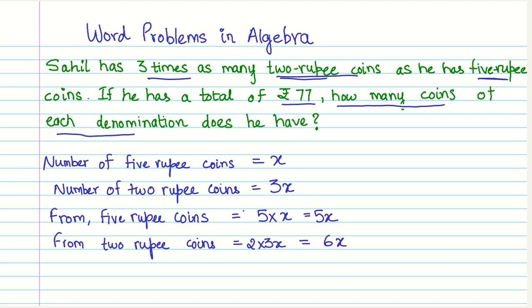Now we can proceed to form an algebraic equation because we are given that the total amount, that is the total amount of these two numbers, the money he has from five rupees and two rupees coins is ₹77. So we can say that 5x plus 6x, when we add up the money amount from five rupees and two rupee coins, that comes out to be ₹77.